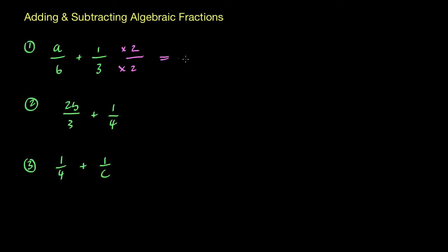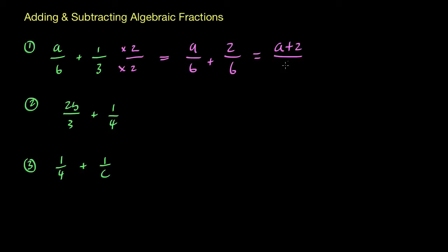So what I have now is a over 6 plus — if I multiply that 2 into the 1 I get 2, and 3 times 2 is 6. It's important you recognise that I've got a third but I've just multiplied it by 2 on the top and the bottom, so I've really just multiplied it by 1. Now I've got 6 and 6 on the bottom, which means I can write a plus 2 all over 6.